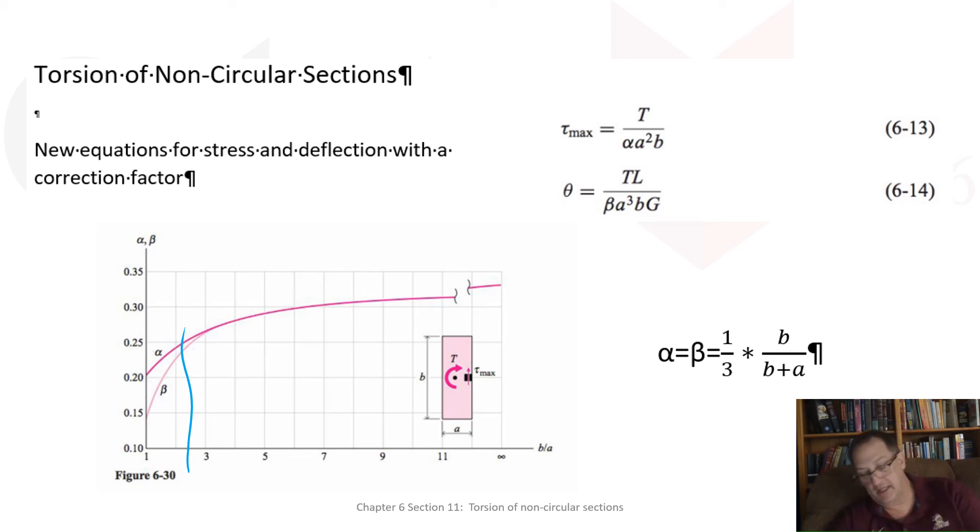Alpha is equal to beta. They're roughly the same. They are once you get above here, and that's approximately equal to one-third times B over B plus A. And I just think that one-third times B over B plus A will make solving problems a little bit easier. It makes grading things for me easier because you're all using the exact same values for alpha and beta if you've done the problem correctly.